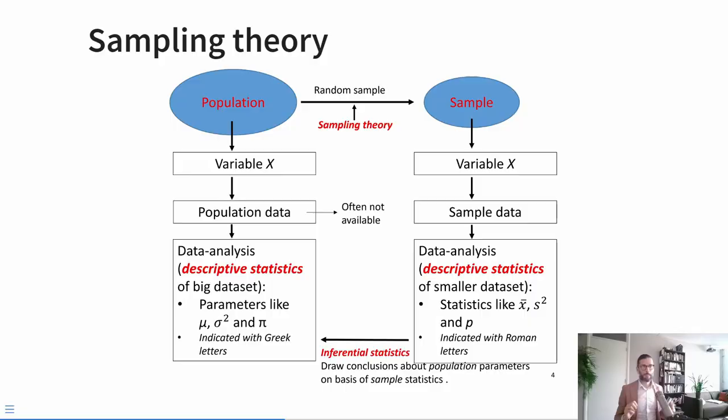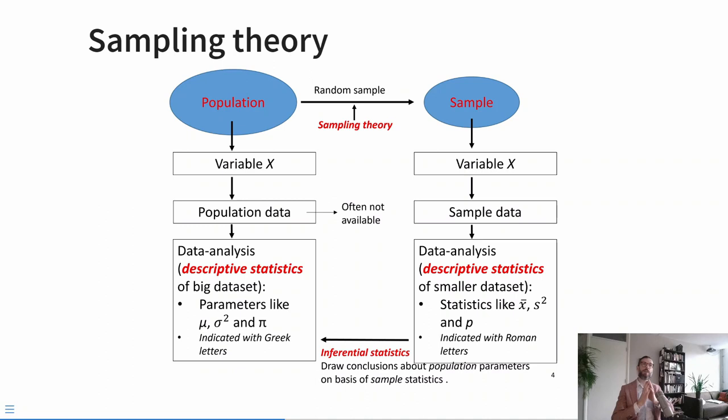The relationship between population and sample is described in sampling theory. Sampling theory describes the existence of this abstract population, which has certain characteristics — for example, variable X. If we could access everybody in the population's score on variable X, we could perform descriptive analysis: this population has an average score of a certain amount, their scores are spread out by a certain amount, or some proportion has a certain trait. We call these descriptive characteristics of the population parameters. To indicate we're talking about parameters, we typically use Greek letters.